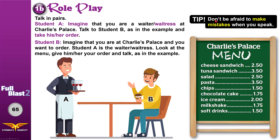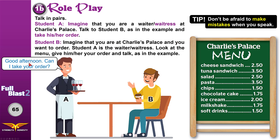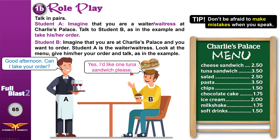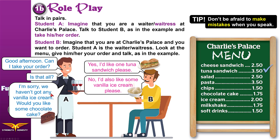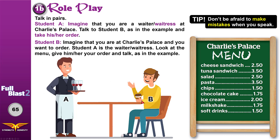When you speak, it's okay if you make mistakes — that's not a problem. Good afternoon, can I take your order? Yes, I'd like one tuna sandwich, please. Is that all? No, I'd also like some vanilla ice cream, please. I'm sorry, we haven't got any vanilla ice cream. Would you like some chocolate cake? No thank you, just the sandwich. Now Student B, take the place of Student A — switch roles.